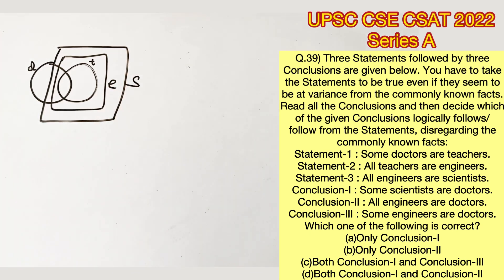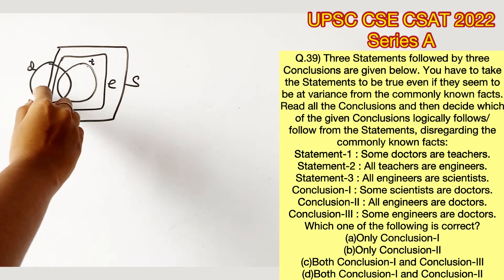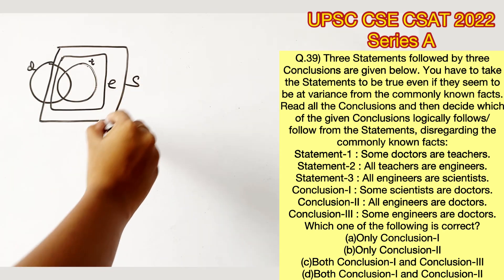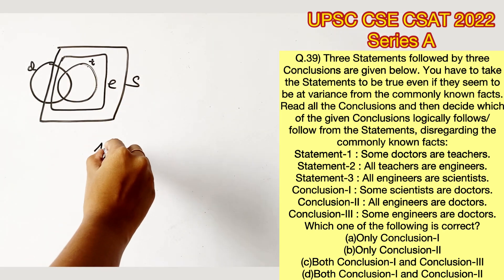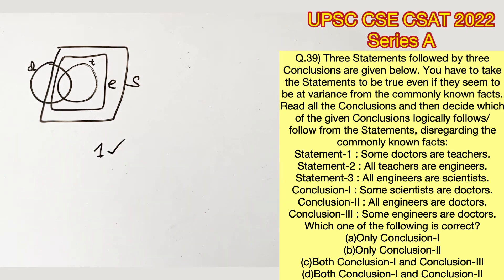Conclusion one says some scientists are doctors, and it is true because some teachers are doctors, and all teachers are engineers, and all engineers are scientists. So some scientists are definitely doctors — conclusion one follows.